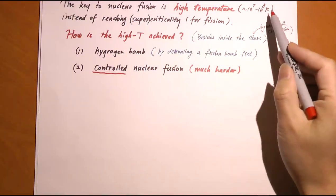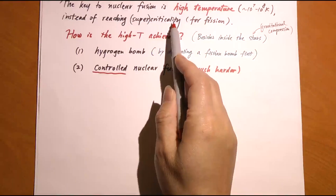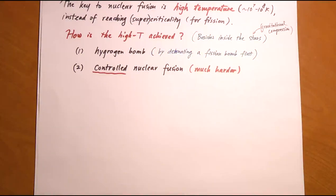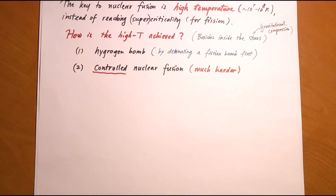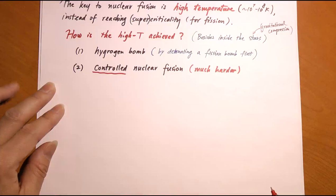For fission, the condition is different—there is no temperature requirement. For a bomb you need to reach supercriticality; for a nuclear power plant you just need to reach criticality (k = 1) so the chain reaction is self-sustaining. For fusion the challenge is how to reach those extreme temperatures. In the Sun, the high temperature is maintained naturally by gravitational compression at the core. For terrestrial fusion—on Earth—you must achieve and sustain that temperature artificially, and there are two applications: military (hydrogen bomb) and peaceful (controlled fusion).